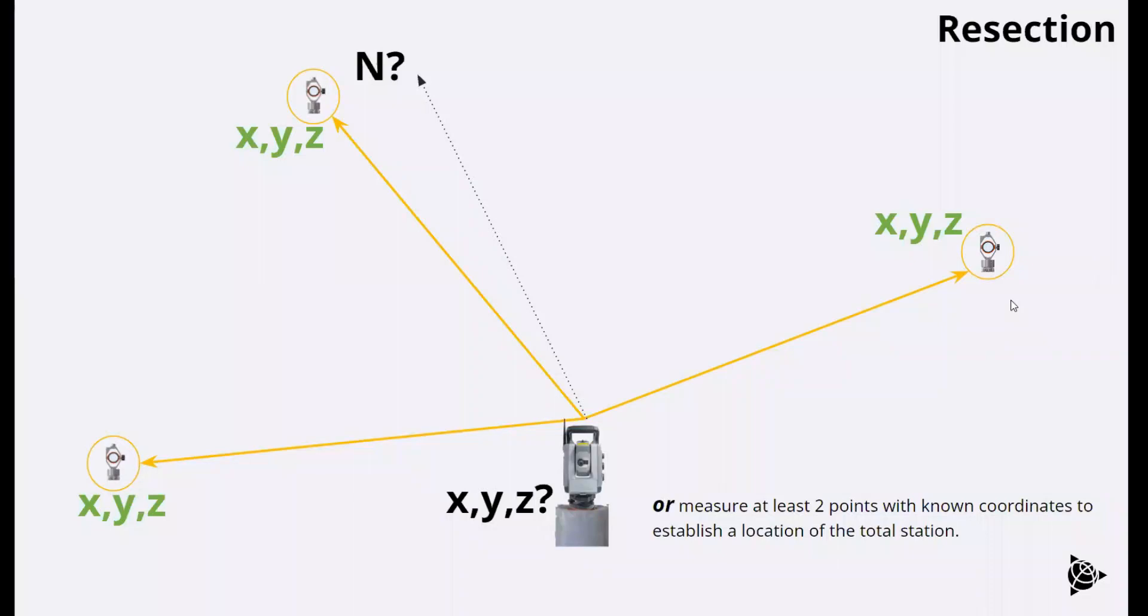And then similar to the station setup plus, we want an additional known point. So we have a total of three known points at least that we have an ability to calculate the location, the orientation, and do a quality check.